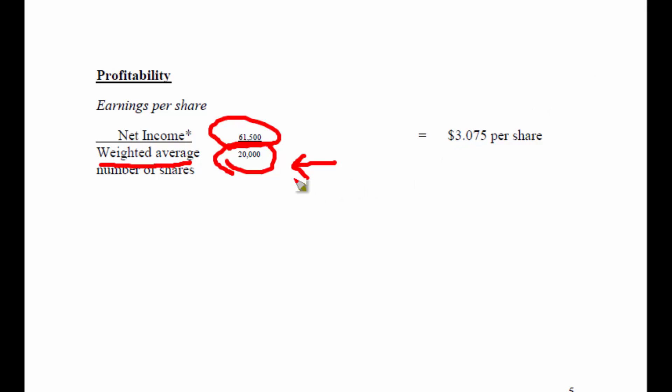Right now, just concern yourself with the fact that there were 20,000 common shares outstanding and those common shares made $61,500 in profit this year. Let's have a look at where I found this on XYZ's financial statements.